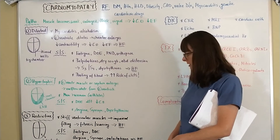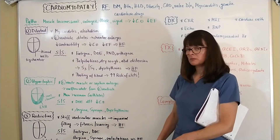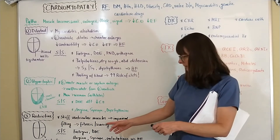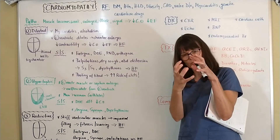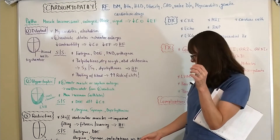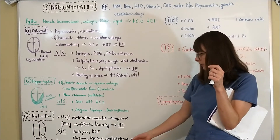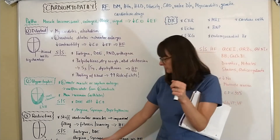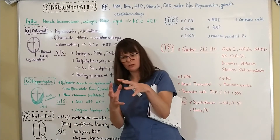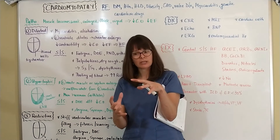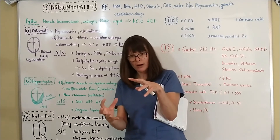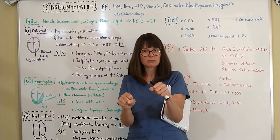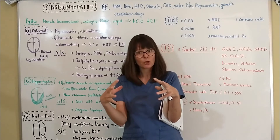The third type is restrictive cardiomyopathy, which is the most rare. The ventricular muscles become stiff and lose their ability to contract, leading to impaired filling because the muscle can't dilate and allow blood to passively fill during ventricular filling. There is fibrosis and scarring of the heart muscle. Think of the rubber band analogy — if that rubber band becomes less elastic, the heart muscle can't produce adequate cardiac output.